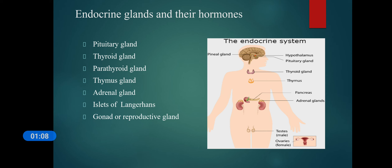That means if our endocrine system isn't healthy, we might have problems developing during puberty, getting pregnant, or managing stress. We might also get tired easily, have weak bones, or lack energy because too much sugar stays in the blood instead of moving into cells where it's needed for energy.